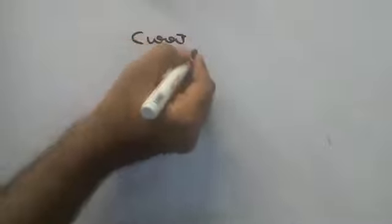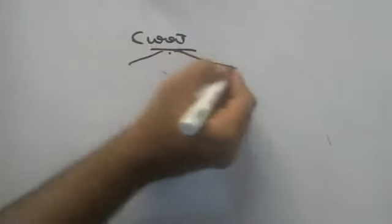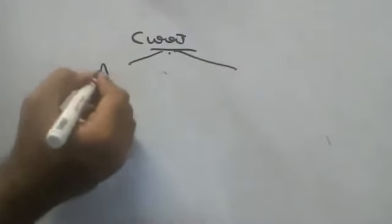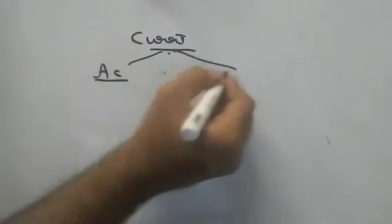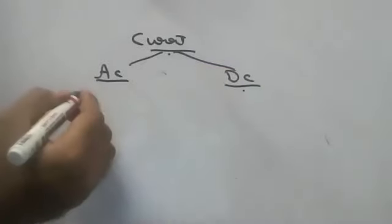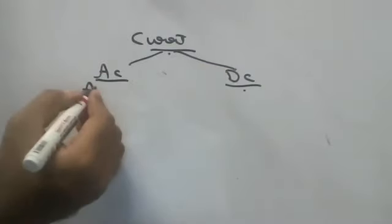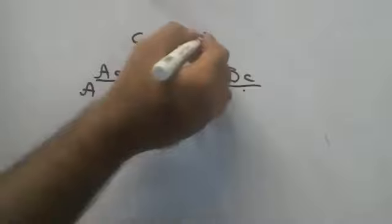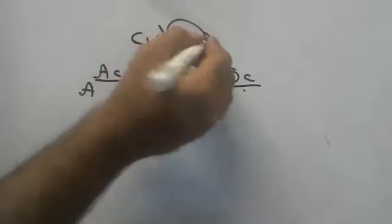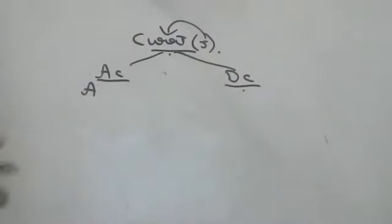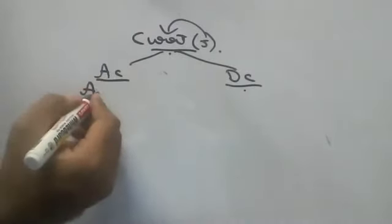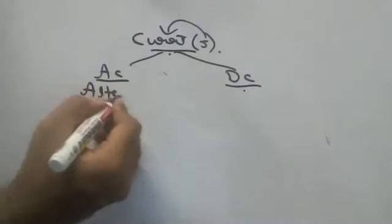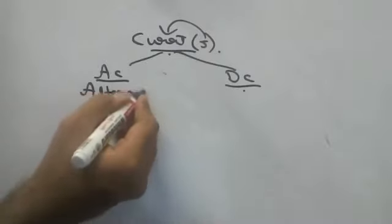Children, there are two types of current. What are the two types of current? One is AC current and the other is DC current. In the board exam they'll ask you: what are the differences between AC current and DC current? If you write five points you get five marks. AC means alternating current.